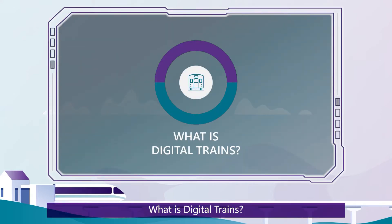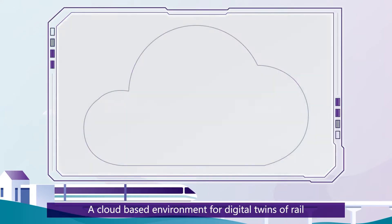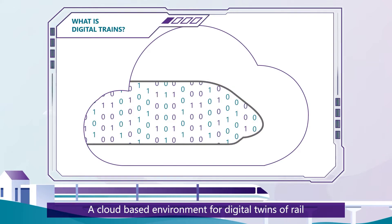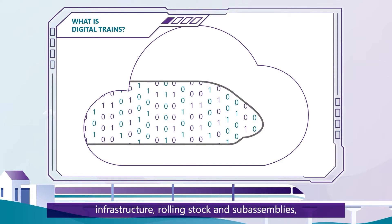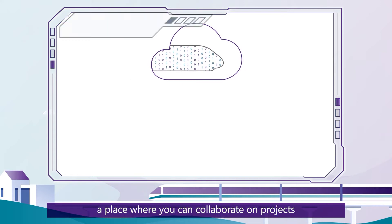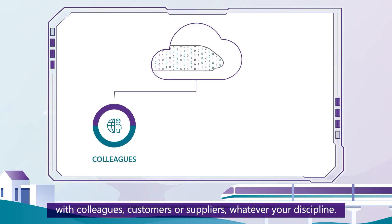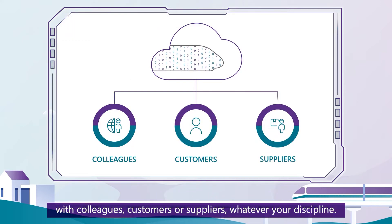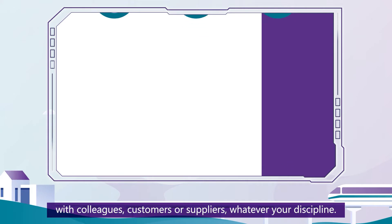What is Digital Trains? It is a cloud-based environment for digital twins of rail infrastructure, rolling stock and sub-assemblies. It is a place where you can collaborate on projects with colleagues, customers or suppliers, whatever your discipline.